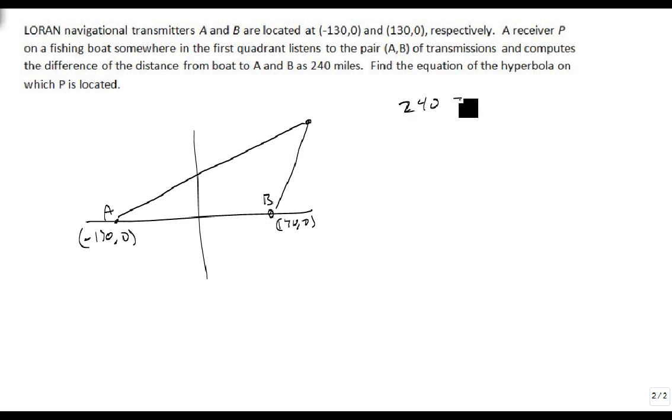So the 240 is equal to 2a, so a is 120. We also know that c is 130, because there's our center, and these are the foci at c.